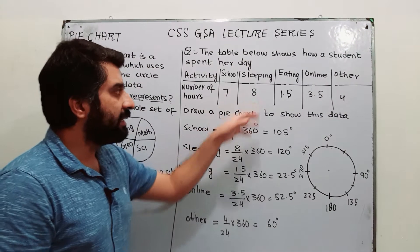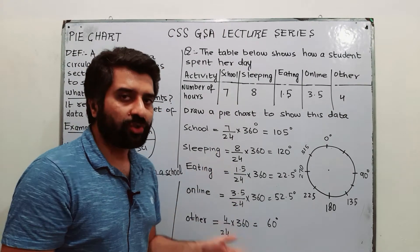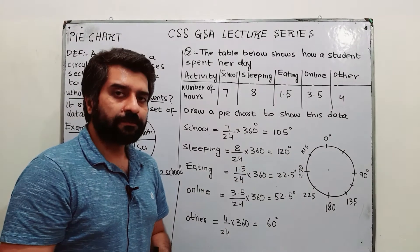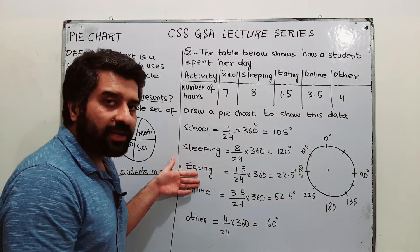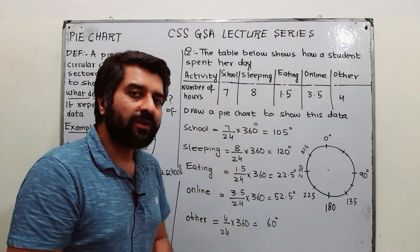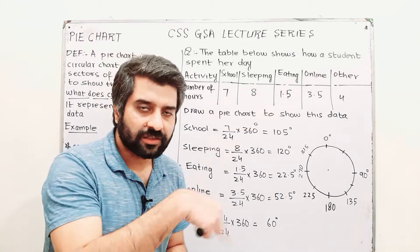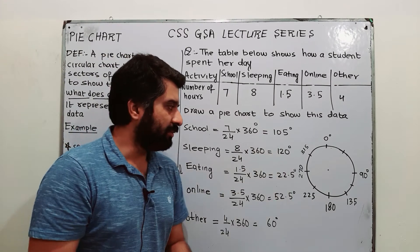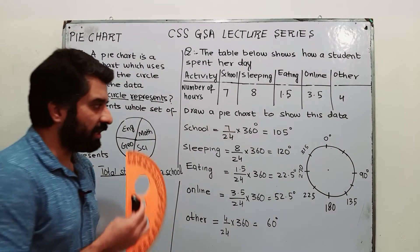The angle for sleeping is the number of hours for sleeping divided by total hours, multiplied by 360 — that gives 120 degrees. Similarly, the angle for eating is 1.5 divided by 24, multiplied by 360. The angles for online and others have also been computed. Now we are going to draw the pie chart.